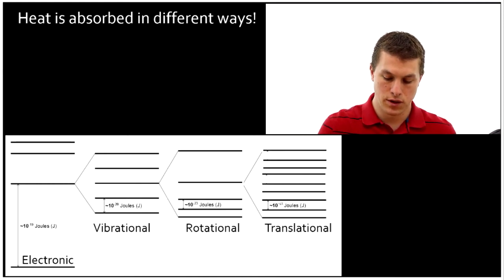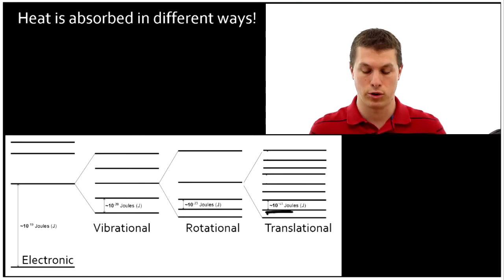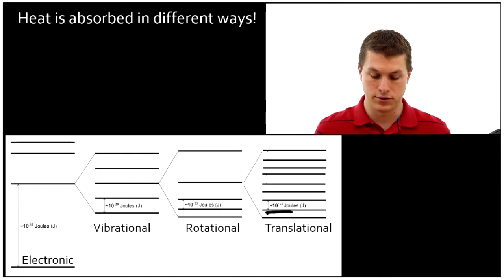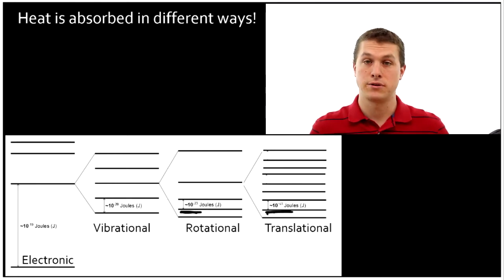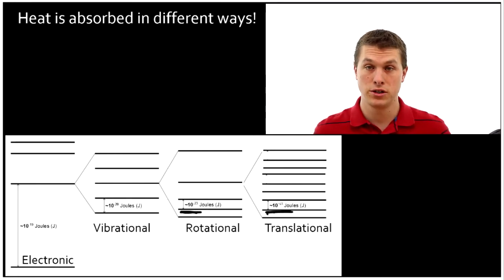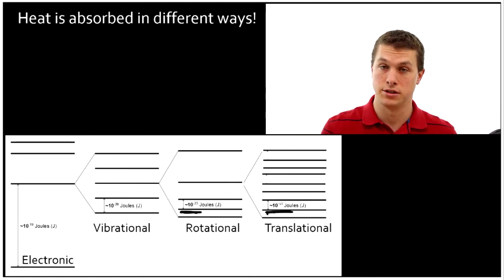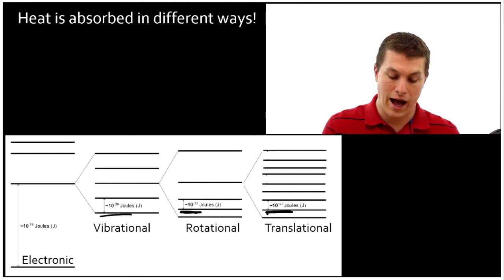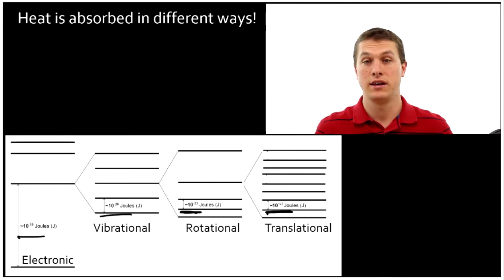So notice that translational energies, the gaps between each of these levels - these are quantized if we think about quantum mechanics - the gaps between each of those levels is like 10 to the minus 40th joules. So that's a really small energy gap. Basically whenever there's any appreciable temperature, something can gain translational energy. But rotational energy, those gaps are higher in energy, 10 to the minus 23 joules. That means the temperature has to be higher before you can give in a single collision enough energy to excite a molecule rotationally. And then vibrational, higher energies, and electronic, finally even higher energies.